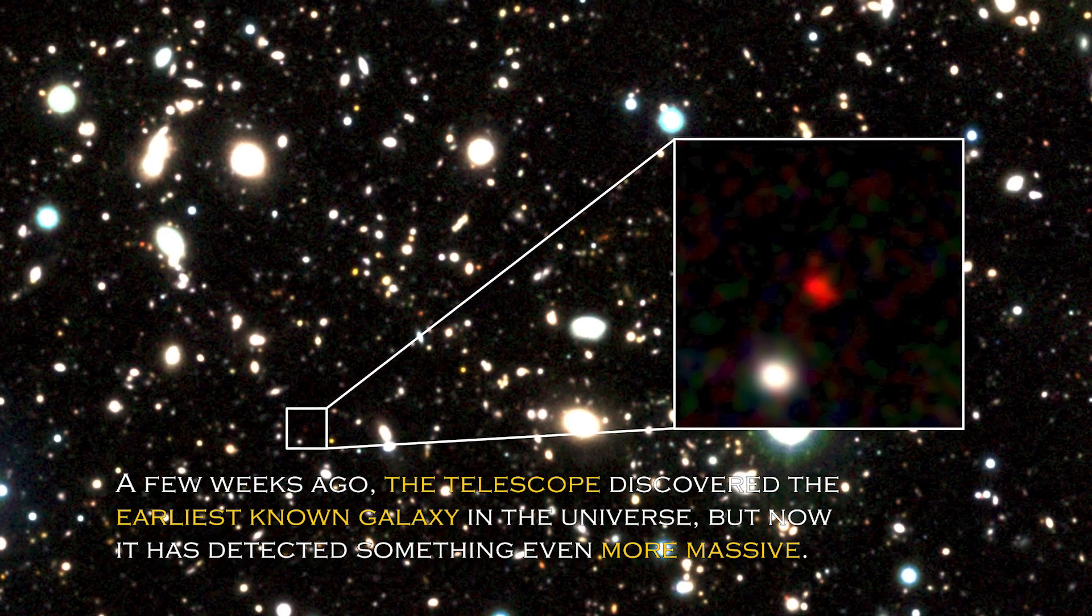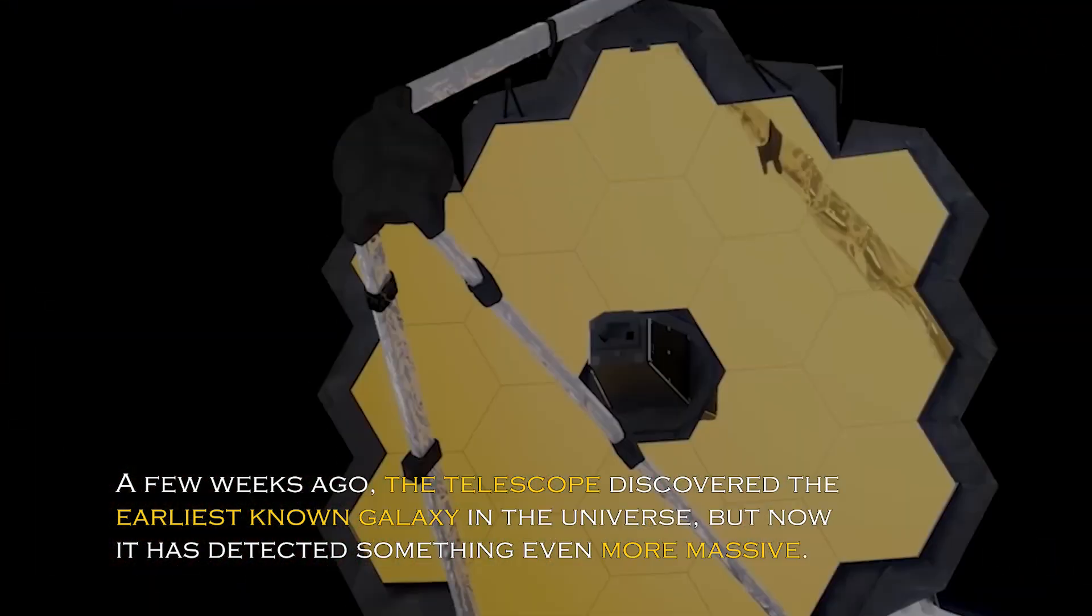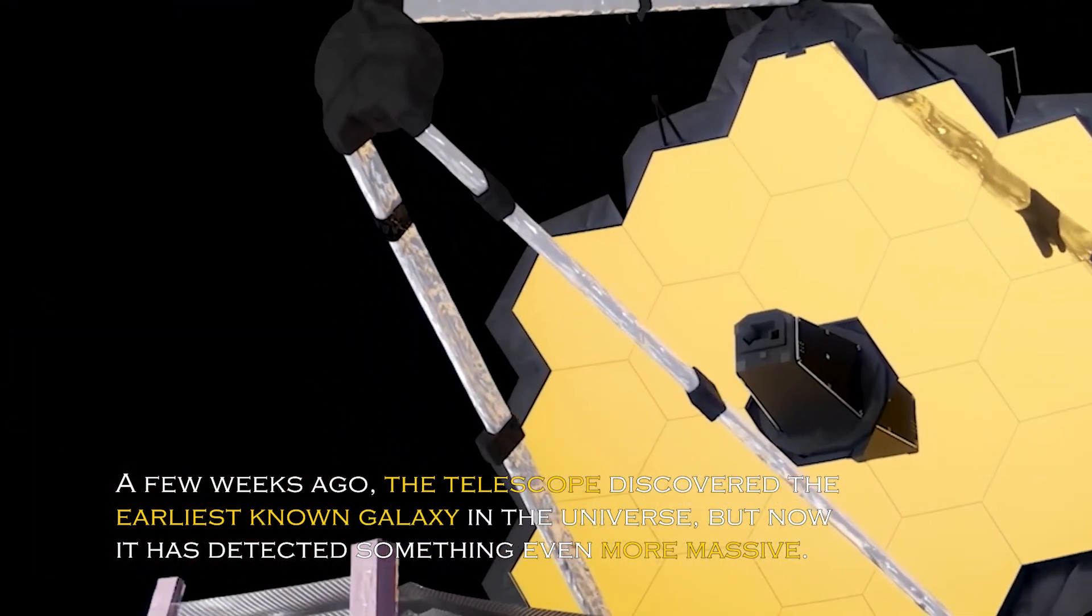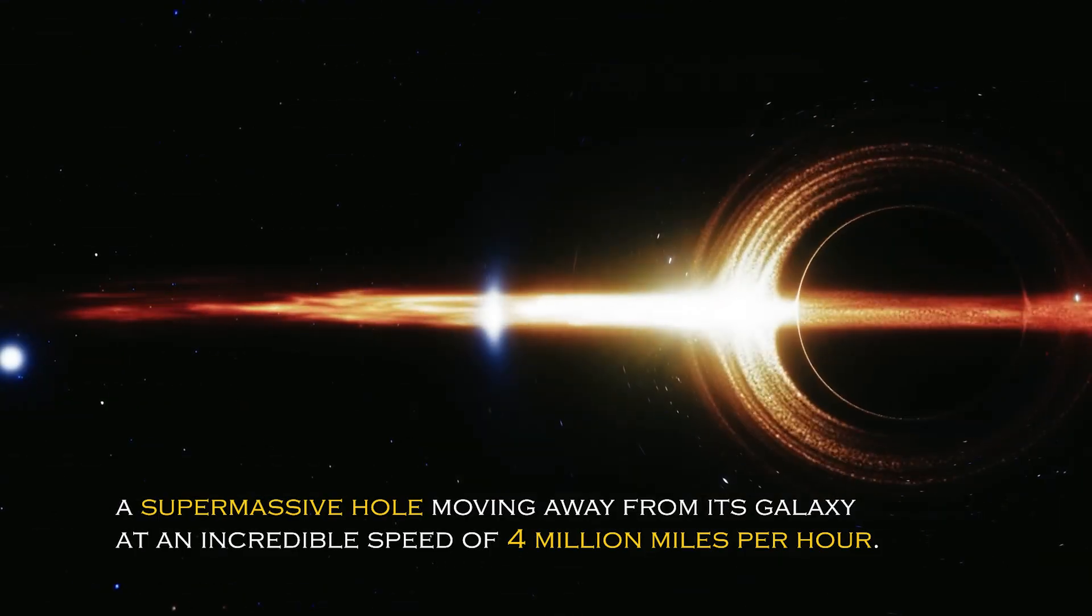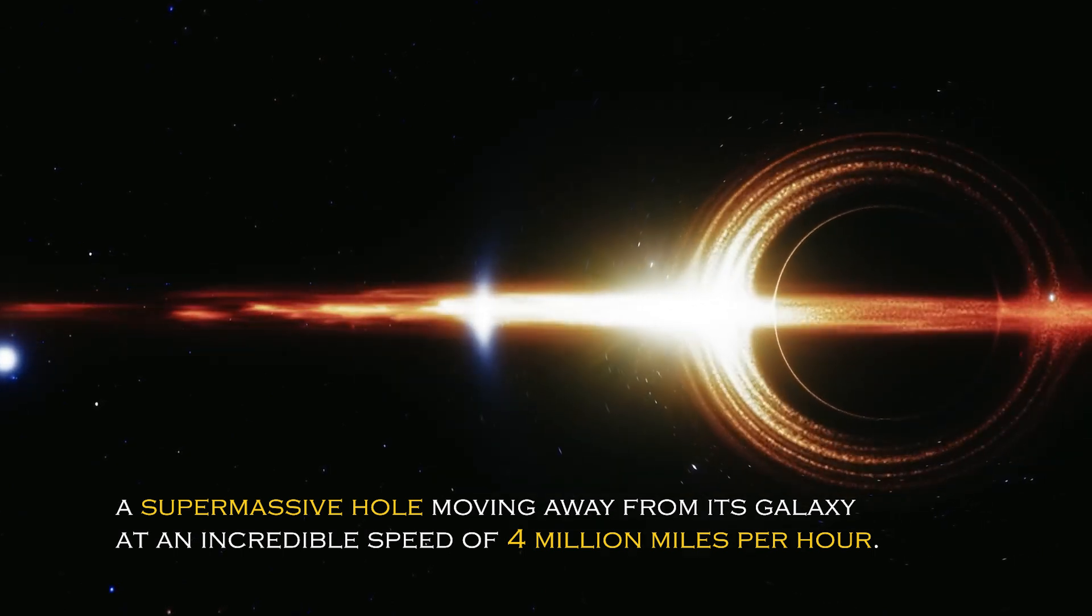A few weeks ago, the telescope discovered the earliest known galaxy in the universe, but now it has detected something even more massive – a supermassive black hole moving away from its galaxy at an incredible speed of 4 million miles per hour.